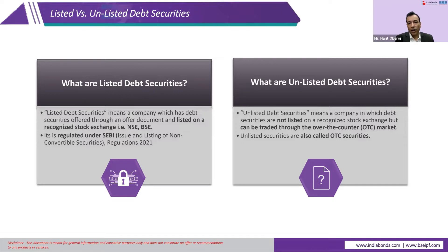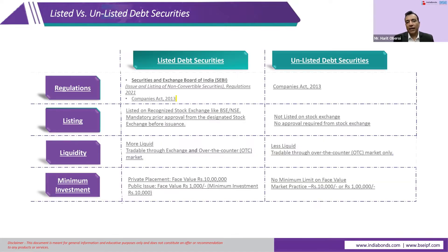In listed securities, SEBI is the regulator. In unlisted securities, there is no such regulator — SEBI doesn't form part of this regulation. When an issuer wants to do a listed security, they must mandatorily take prior approvals from the designated stock exchange before issuance of the debt securities. In unlisted debt securities, there is no such requirement.